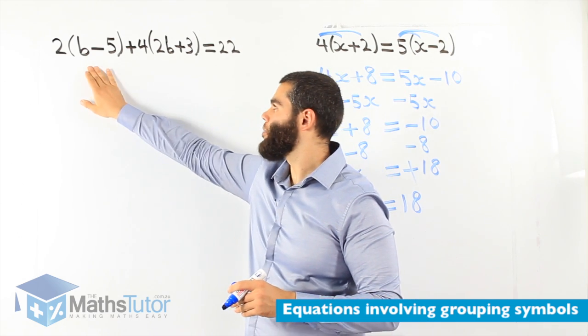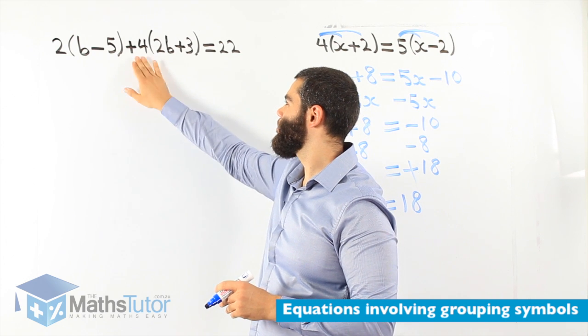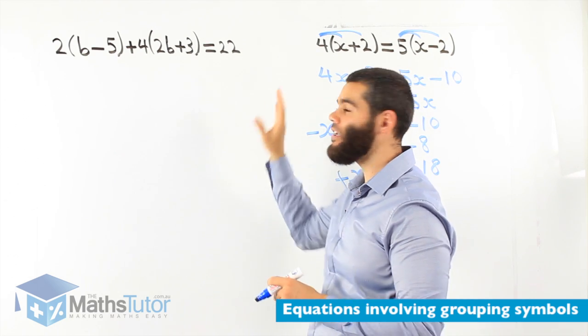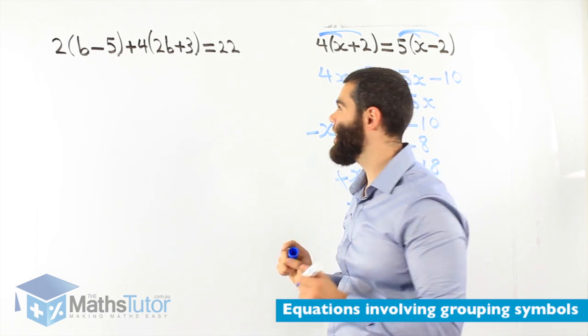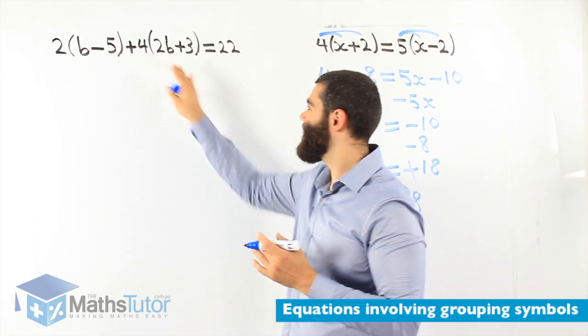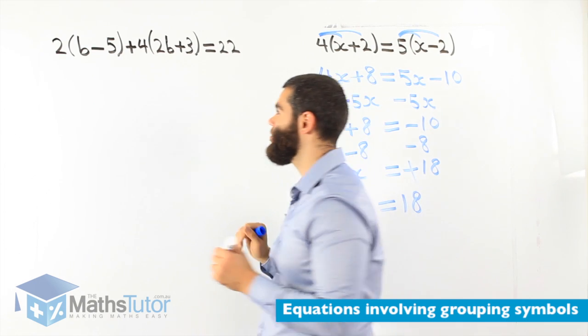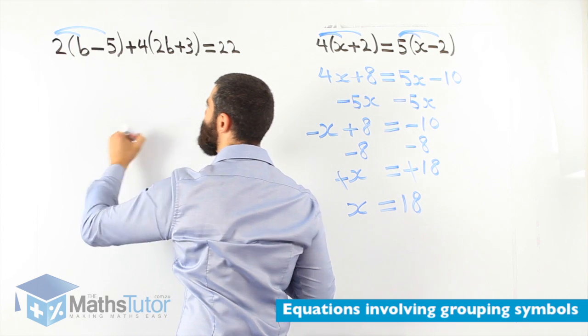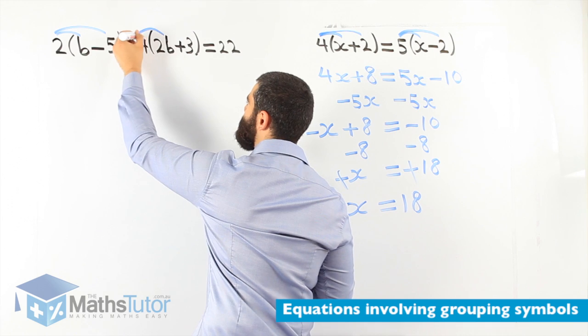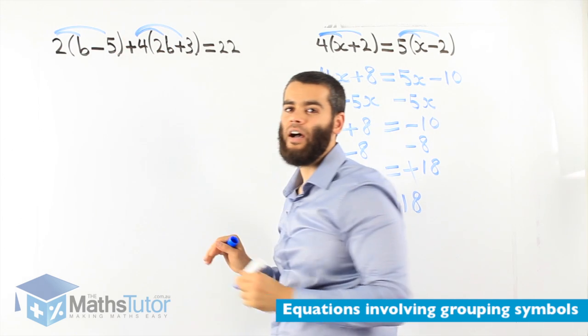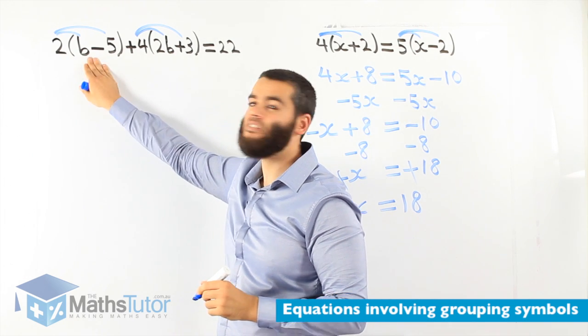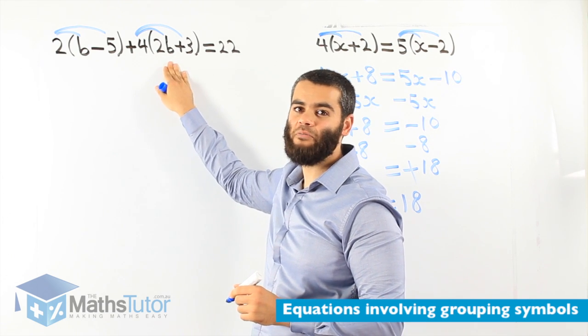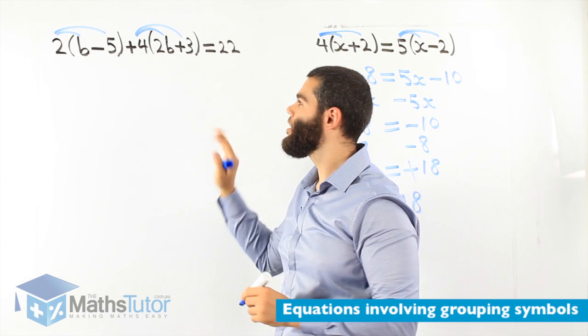2, open bracket, b minus 5, close bracket, plus 4, open bracket, 2b plus 3, close bracket, equals to 22. So, now, what do we do? When we see the brackets, the grouping symbols, we are going to expand first. 2 times b, 2 times negative 5, and positive 4 times 2b, positive 4 times 3. So, the 2 times everything inside these brackets and the positive 4 times everything inside these brackets equals to 22. Let's expand.